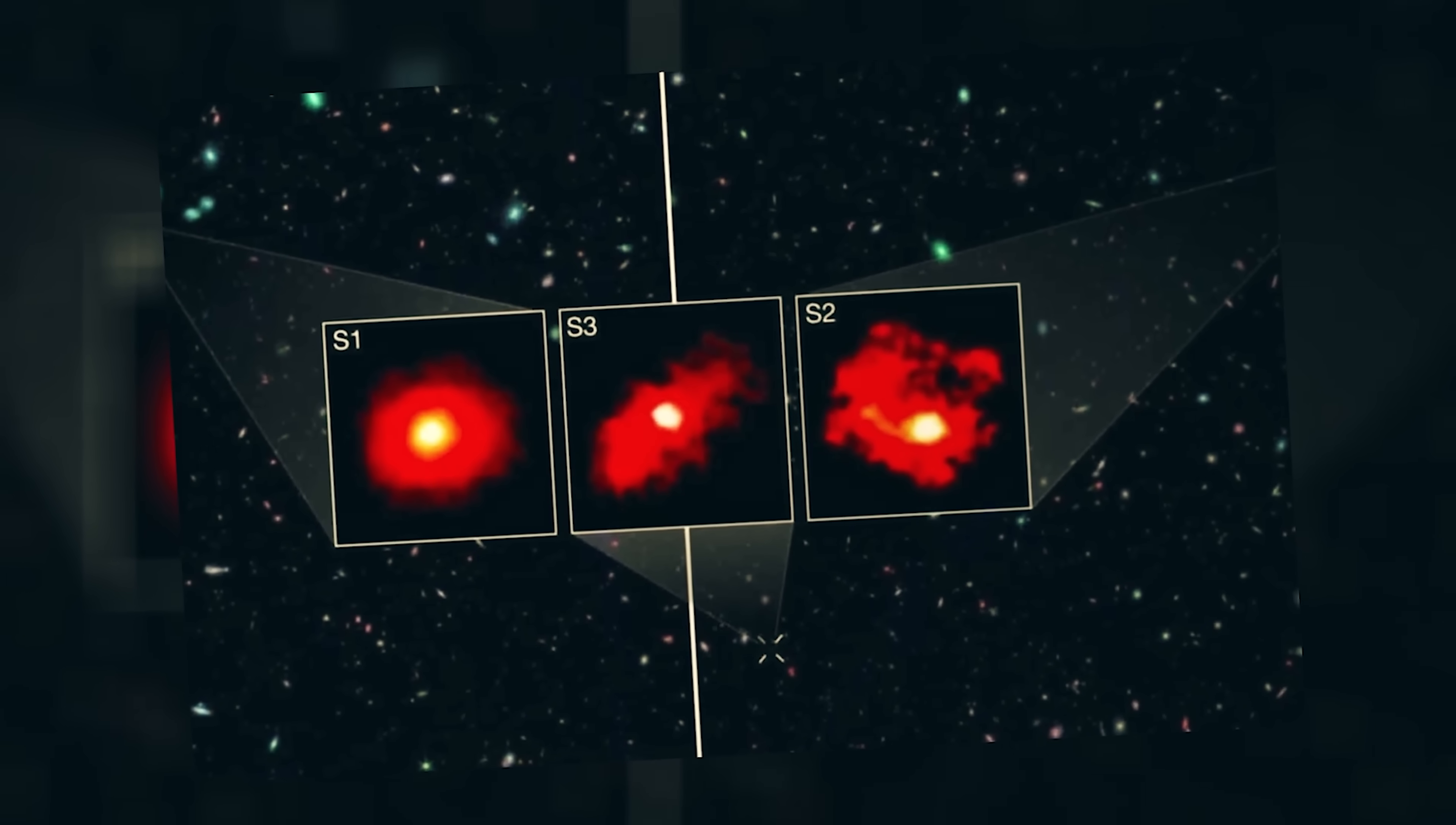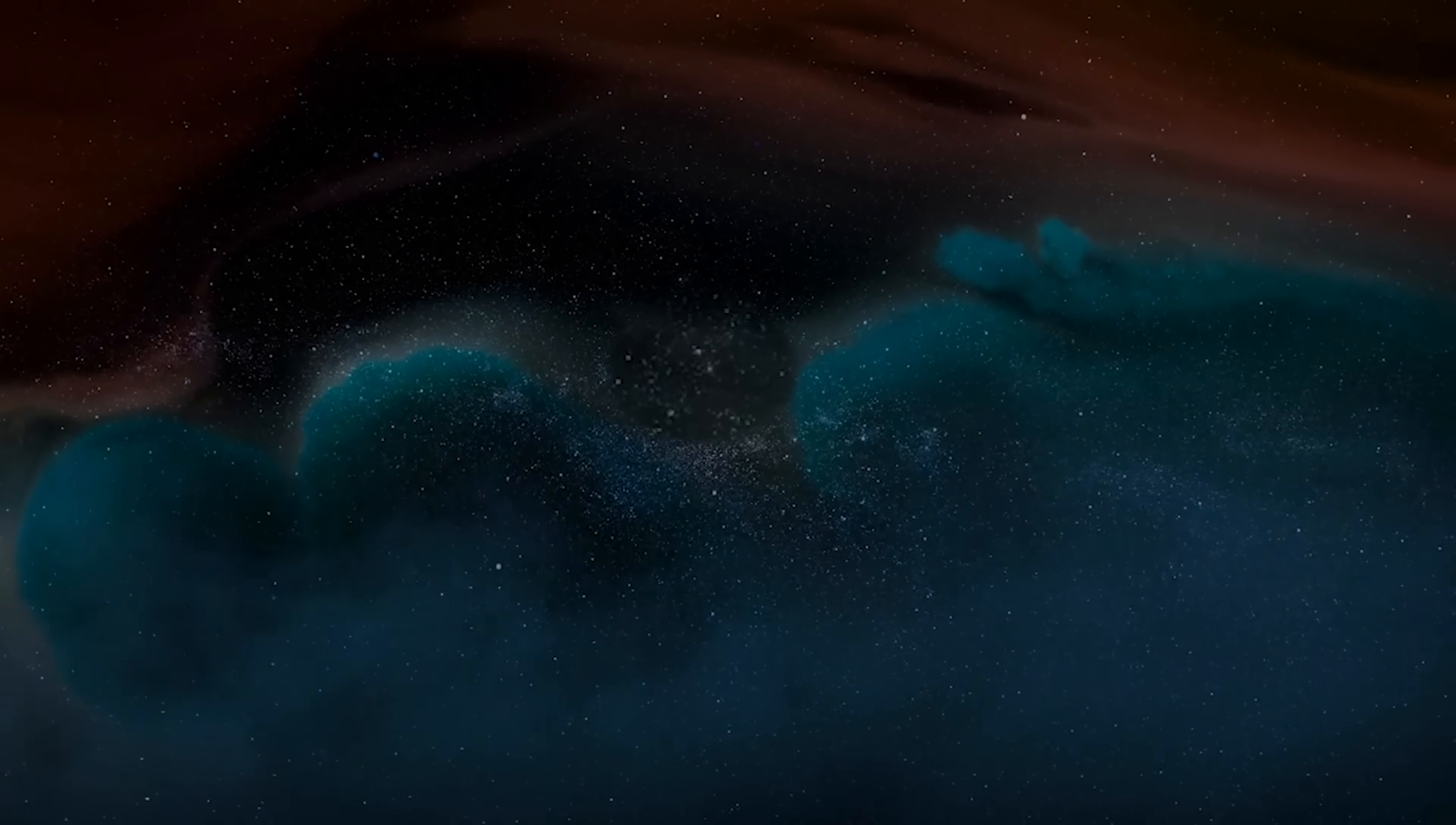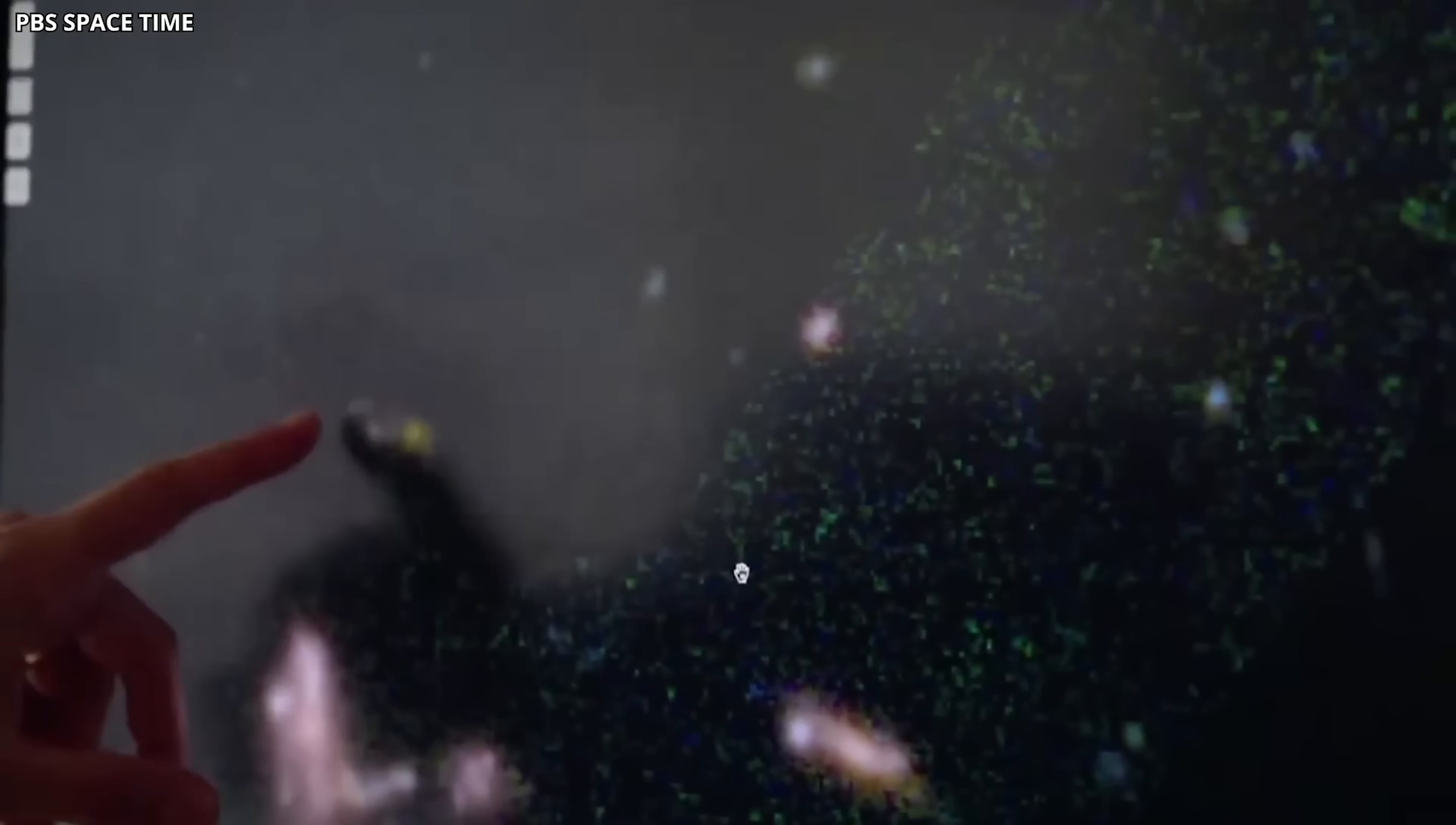However, Webb has recently identified three primordial galaxies that have left astronomers baffled. Spectroscopy data from these objects reveals a remarkable and unexpected phenomenon. They have managed to convert 100% of the surrounding material into stars. This unprecedented discovery contradicts our existing cosmological models, which assert that it is virtually impossible for a galaxy to utilize all of its available atoms for star formation. These startling observations are inciting considerable debate among astronomers, leading many to re-evaluate the mechanisms of early galaxy formation.